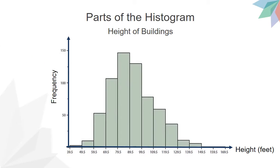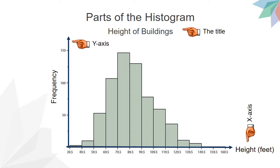Firstly, let's take a look at the parts of a histogram. We have the title — the title describes the information included in the histogram. Next, the X axis shows the values of the measurement. Here, the measurement is the height of buildings in feet. The Y axis shows the frequency. And lastly, the bars represent the number of times that the values occurred within the interval sets.